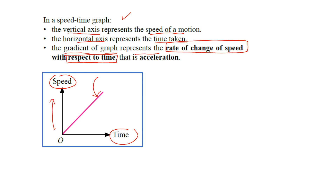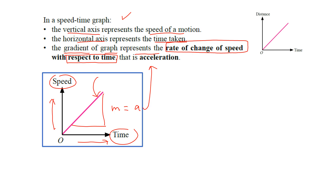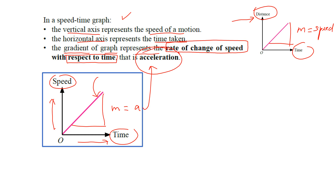As you can see here, the speed is changing — it is increasing with time. If you find the gradient, your m, it is actually your acceleration. In your previous lesson on the distance-time graph, if you found the gradient, you were actually finding the speed. That is the difference with the speed-time graph. So what do you understand by acceleration?